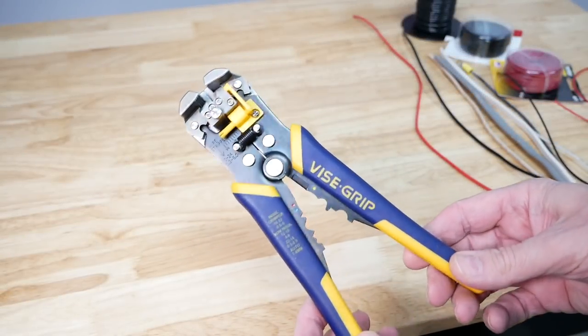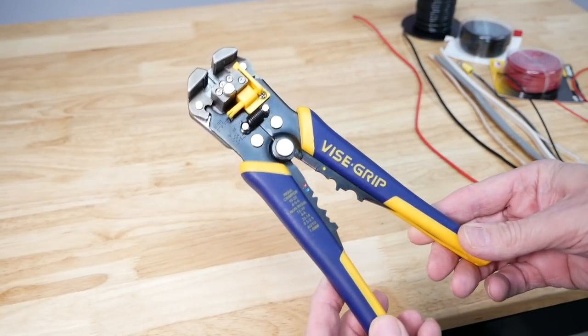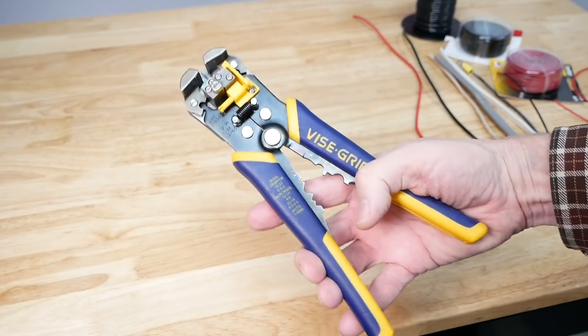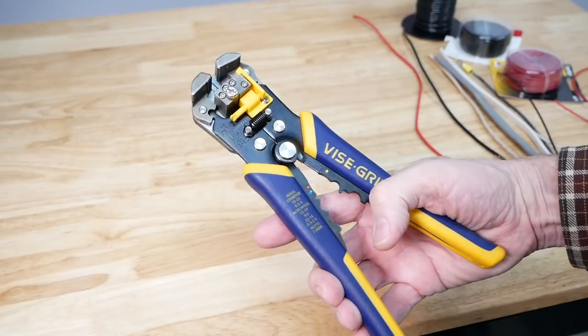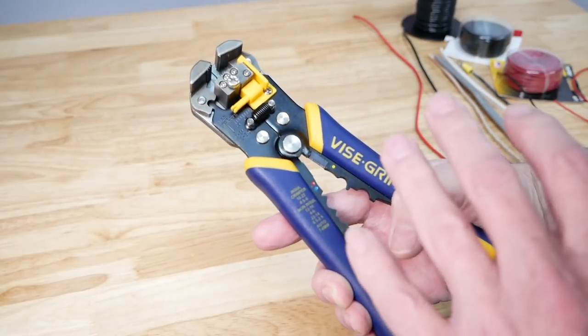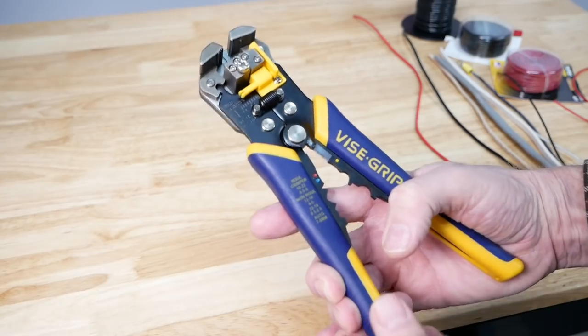This is the Vice Grip Wire Stripper from Irwin Tools, and I think it's one of the best tools in my toolbox, especially when it comes time to working with wiring. That's because it doesn't work like any other wire stripper.